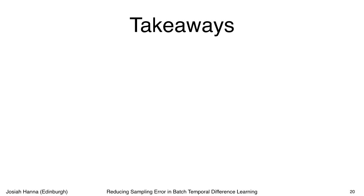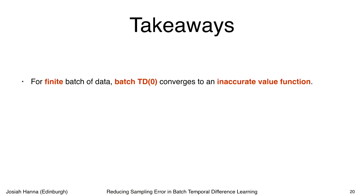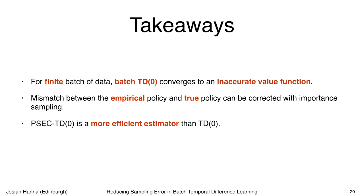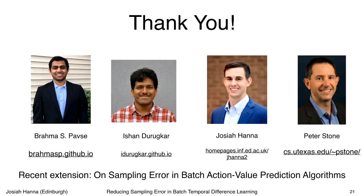To conclude with a few takeaways: for a finite batch of data, the fundamental reinforcement learning algorithm batch temporal difference learning converges to an inaccurate value function. We show that this mismatch between the empirical maximum likelihood policy and the true policy can be corrected using importance sampling. Finally, we introduce the PSEC temporal difference method and show that it is a more efficient estimator than standard temporal difference learning. Thank you.